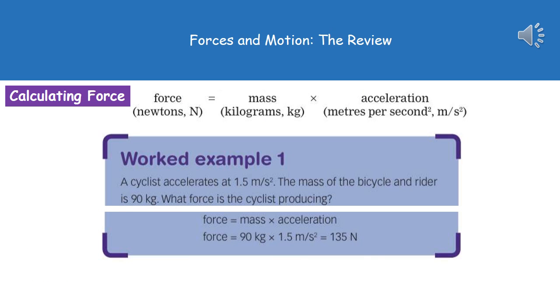To give you an example of the kind of question that might come up: A cyclist accelerates at 1.5 meters per second squared. The mass of the bicycle and rider is 90 kilograms. What force is the cyclist producing? We turn to page two, we find our formula which is force equals mass times acceleration, and then we put our numbers in. The mass is 90 kilograms and the acceleration 1.5, so 90 times by 1.5 gives us our answer of 135 newtons.